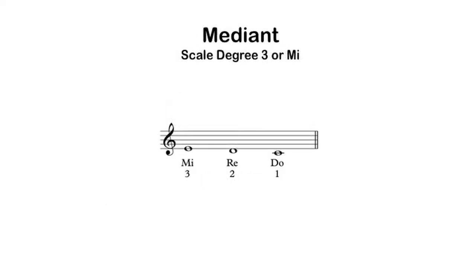The next scale degree is the mediant, or scale degree 3. Scale degree 3 is fairly stable, being a member of the tonic triad, but it still has a little bit of energy that wants to move back to tonic. It moves down by step through 2 to 1: three, two, one — or mi, re, do.